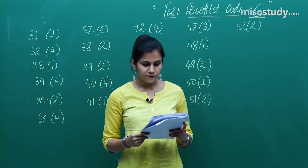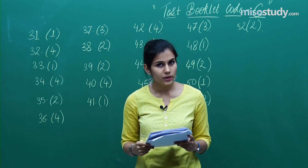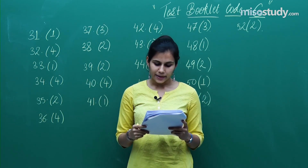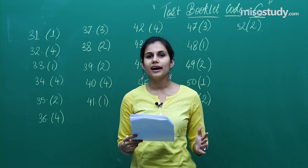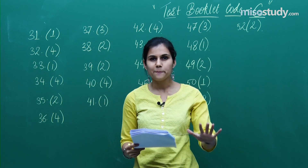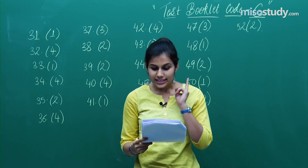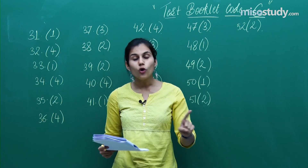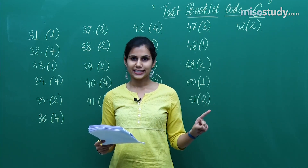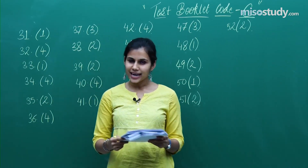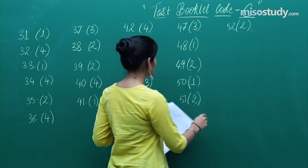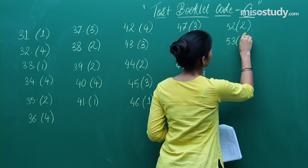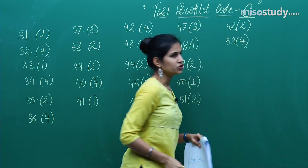Question 53 is based on the concept of differentiability. The set given to you comes out to be equal to an empty set — no element is sitting inside it. The answer is phi (∅), which is the fourth option. So question 53, fourth option is the correct one.